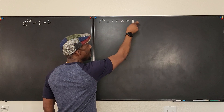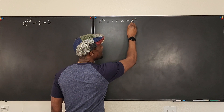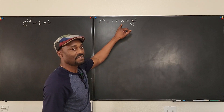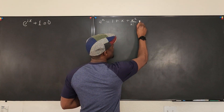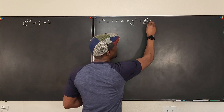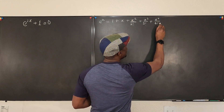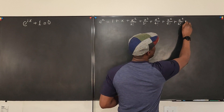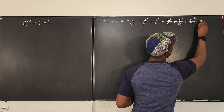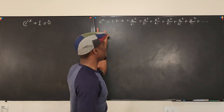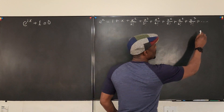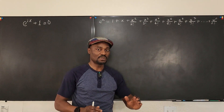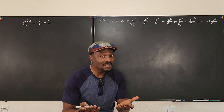Then you have x squared, but each time you divide by the factorial of the power. Here we go: x cubed over three factorial, plus x to the fourth over four factorial, plus x to the fifth over five factorial, plus x to the sixth over six factorial, plus x to the seventh over seven factorial, and you keep going. Every term is x to the n over n factorial — that is the polynomial representation of e^x.